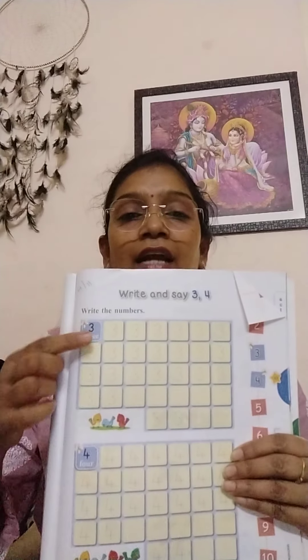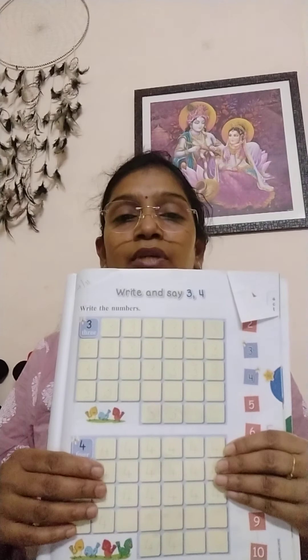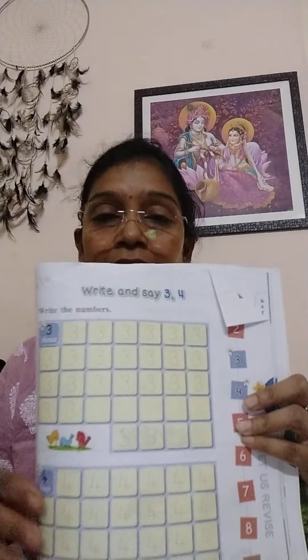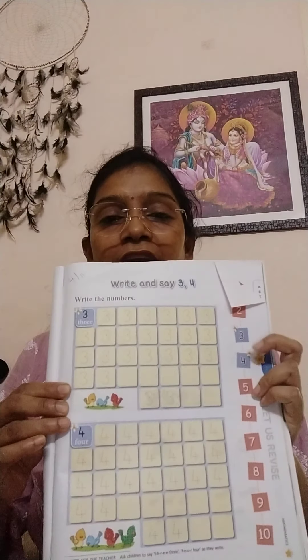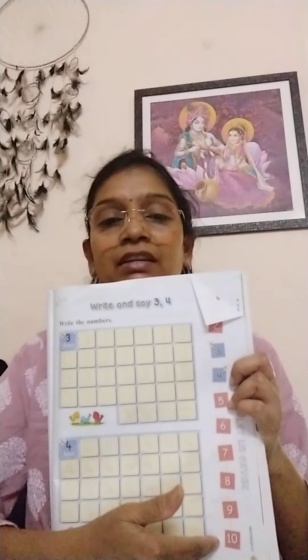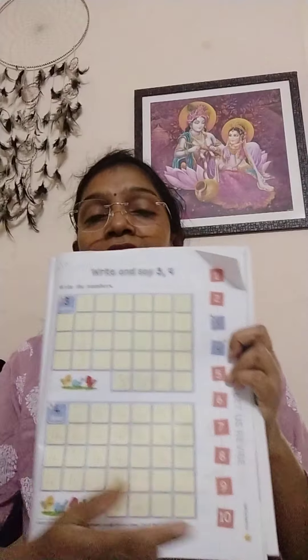Today we are going to complete 3 and 4 because already you know how to write. This page you are going to write today. You know how to write, you join the dots, and while writing you will be repeating the number. Whatever you are writing, you need to repeat and write children. Here 1 to 10 numbers they have given children. Orally also you can learn numbers.